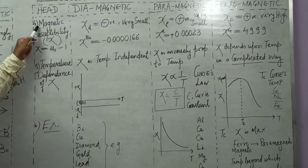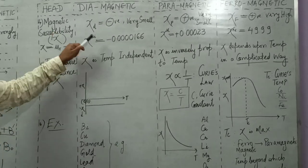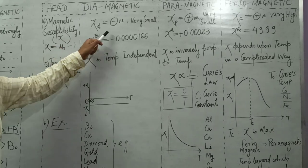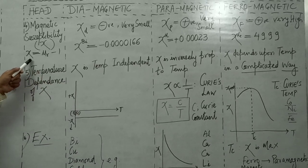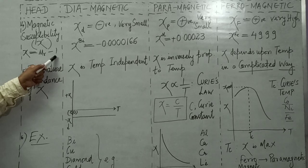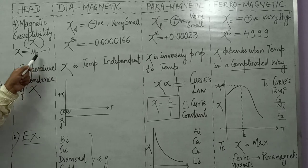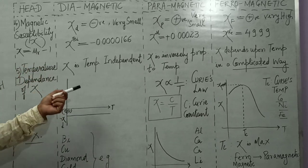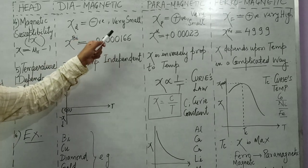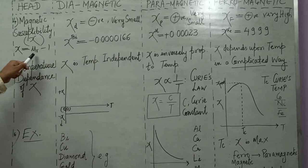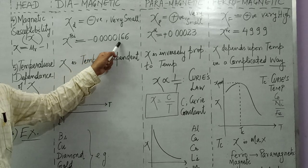Next is magnetic susceptibility. Magnetic susceptibility χ = μr − 1. For diamagnetic substances μr is slightly less than one, so subtracting one gives a negative value — magnetic susceptibility is negative and very small. For Bismuth, χ = −0.00000166.